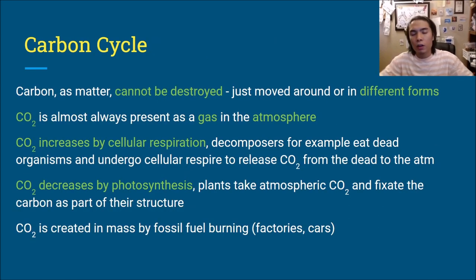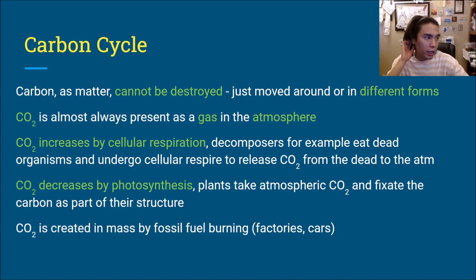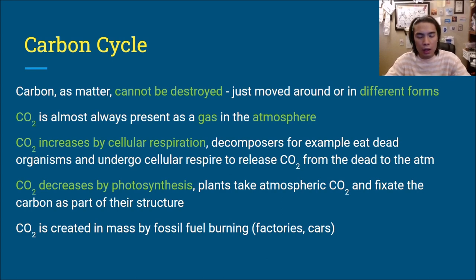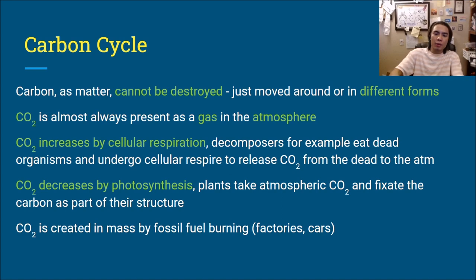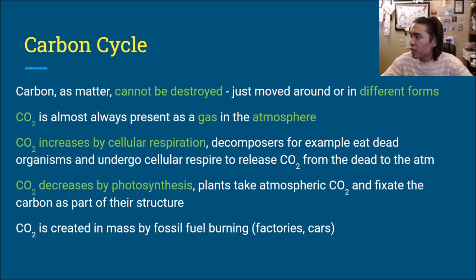Now the carbon cycle. Carbon as matter cannot be destroyed — it can just be moved around in different forms. CO2 is where carbon is present as a gaseous form in the atmosphere. CO2 increases through cellular respiration, which all organisms undergo. For example, decomposers like fungi and bacteria break down dead organisms, undergo cellular respiration, and release CO2 — moving carbon from the dead into the atmosphere. CO2 can be reduced by photosynthesis: plants take in atmospheric CO2 and fix the carbon into sugars. CO2 outputs have increased drastically in the past 200 years due to fossil fuel burning.